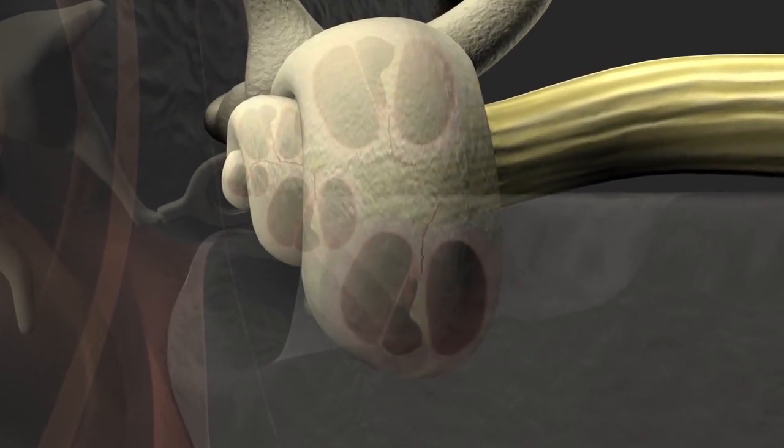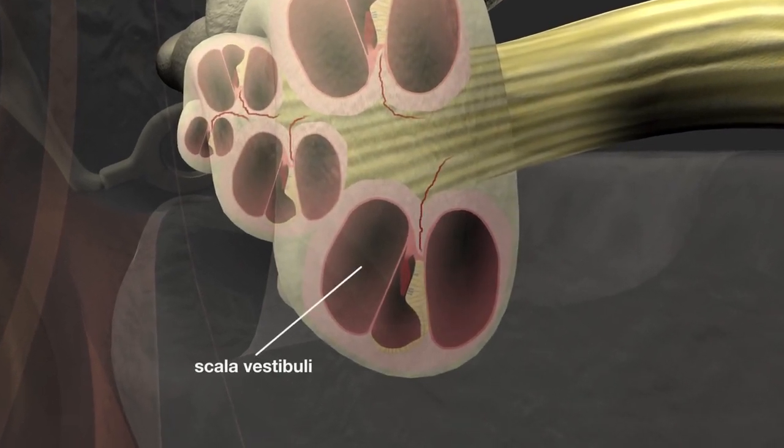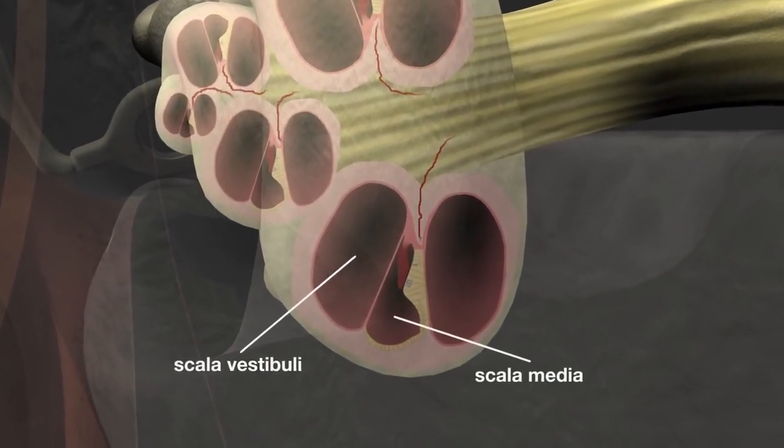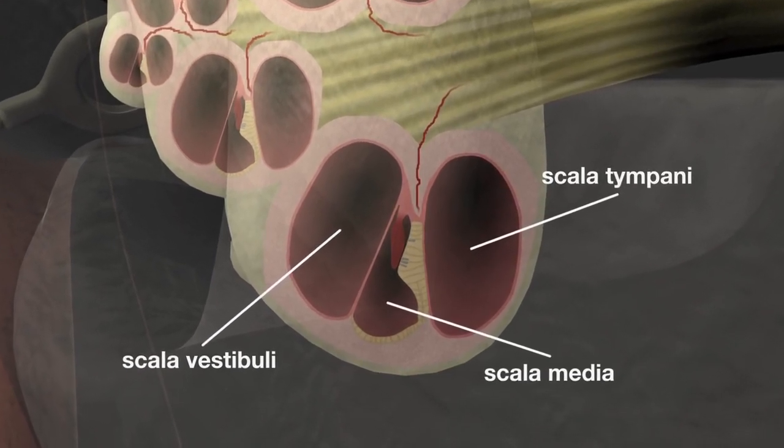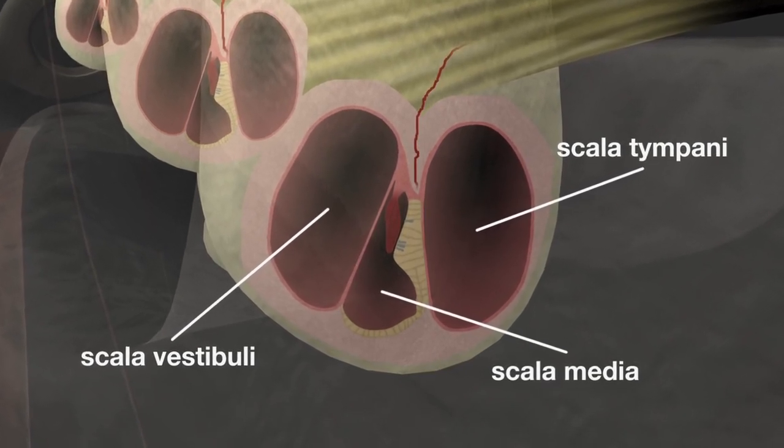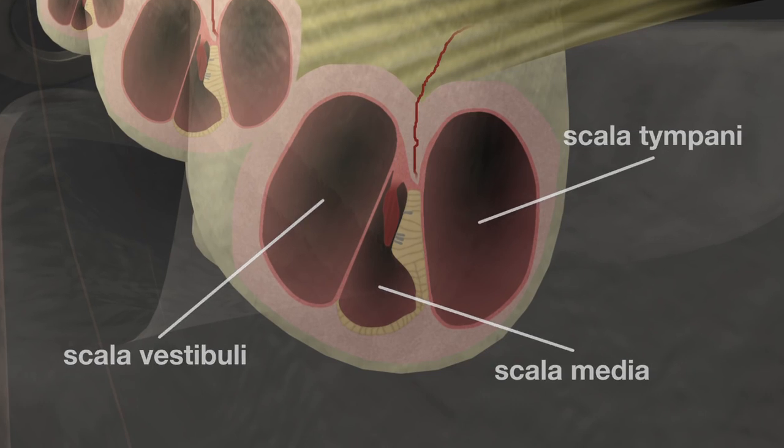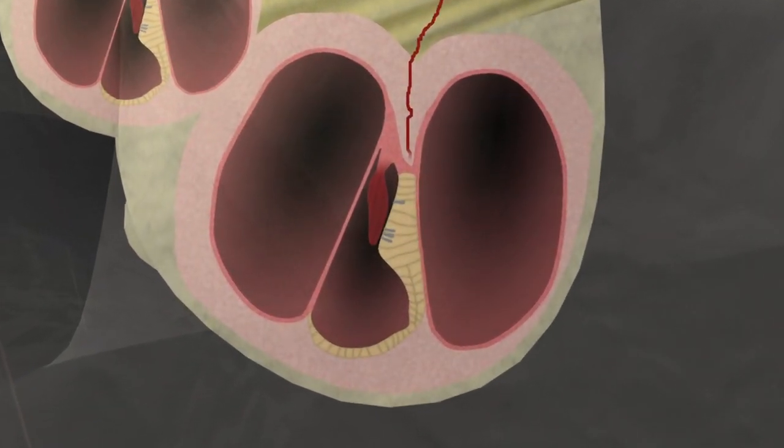It is split into three distinct sections known as the scala vestibuli, scala media, and scala tympani. The scala vestibuli and the scala tympani contain perilymph fluid. The scala media contains endolymph fluid. The Reissner's membrane separates the scala vestibuli from the scala media, and the basilar membrane separates the scala media from the scala tympani.